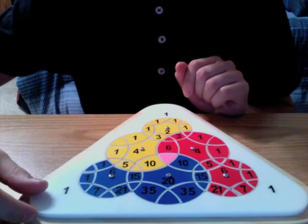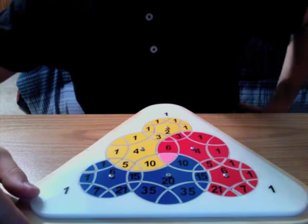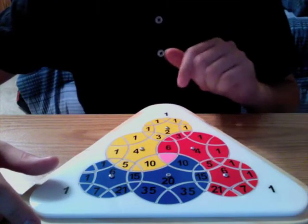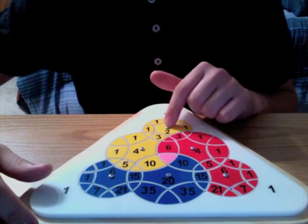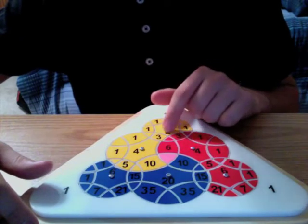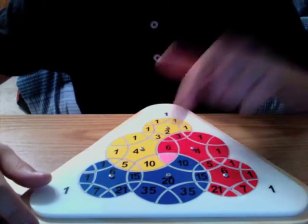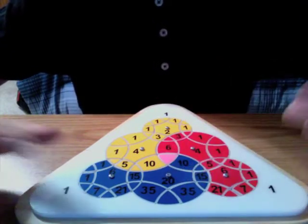Pascal's Triangle is an interesting mathematical pattern. For those of you who don't know about it, here is a quick overview. If you take two numbers, add them together, you get the number just below it. For example, 1 plus 2 equals 3. 3 plus 3 equals 6. 6 plus 4 equals 10. 20 plus 15 equals 35, and so on.